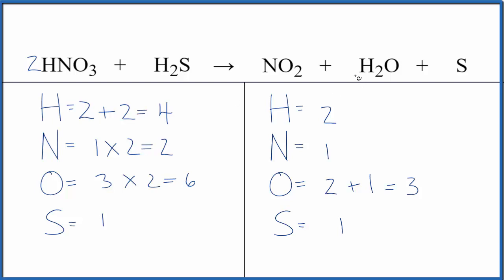But we can fix the hydrogens by putting a two in front of the water. Two times two, that'll give us four. We do need to update the oxygens. So we have two here plus the two times the one plus the two. That gives us four. We're getting close.